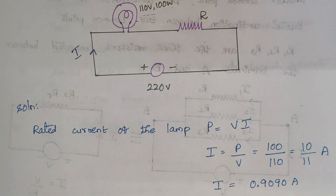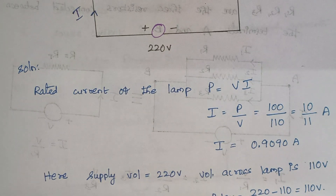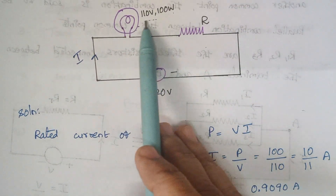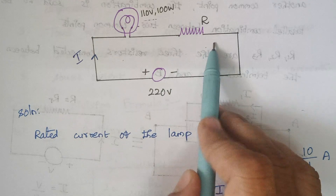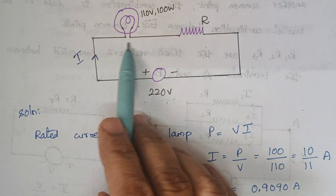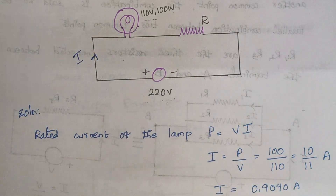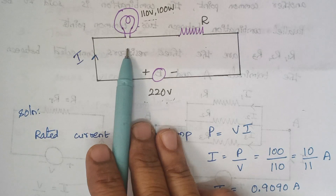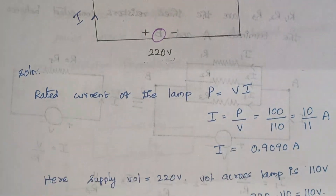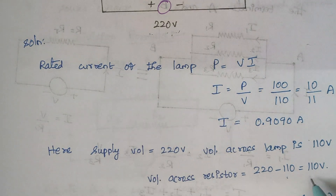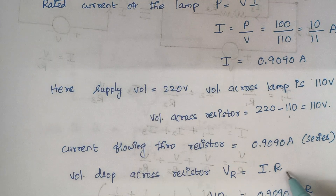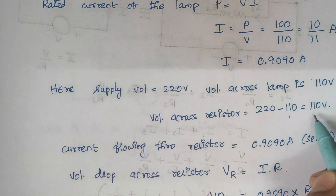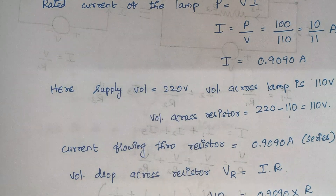The supply voltage is 220 volts. The voltage across the lamp is 110 volts, as specified by its rating. Since this is a series circuit, the voltage drop across the added resistor is 220 − 110 = 110 volts. The voltage drop across the resistor is given by V = I × R, so 110 = I × R.